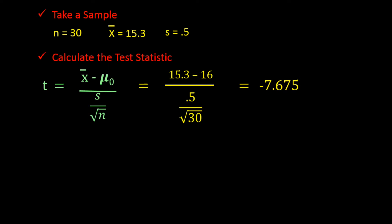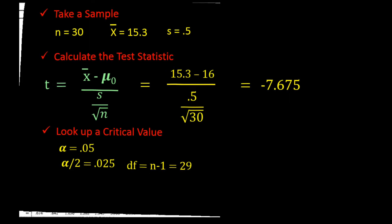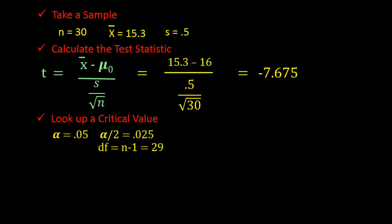Now we need to look up the critical value. Let's use an alpha value of 0.05, that is a 0.05 level of significance. Since this is a two-tail test, we need to split alpha in half so we get 0.025, and then we need to look up degrees of freedom in the t-table, which is n minus 1 — 30 minus 1 — giving us 29 degrees of freedom. Looking up in the t-table under alpha divided in half of 0.025 and 29 degrees of freedom, we get 2.045. That is our critical value that divides the rejection and non-rejection regions.